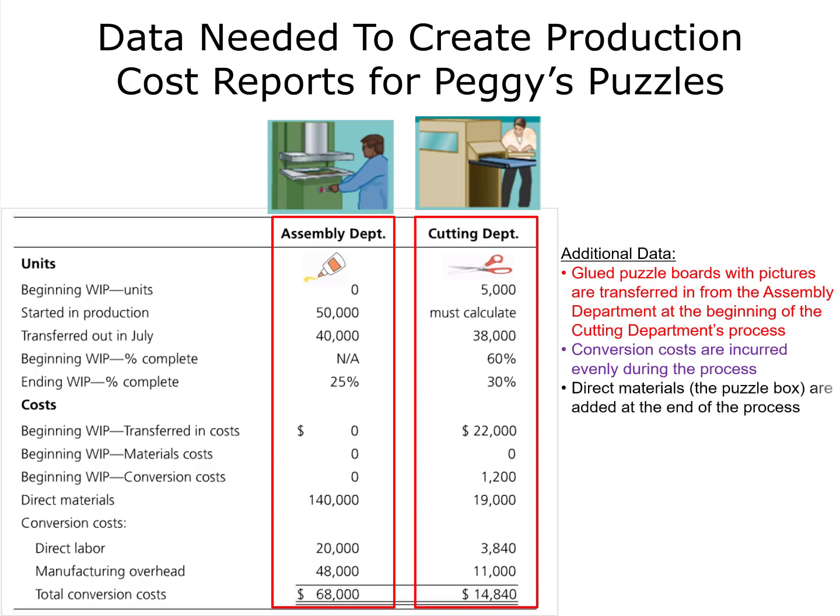Direct materials, which are the puzzle boxes that the pieces are put in, are added at the very end of the cutting department's process.